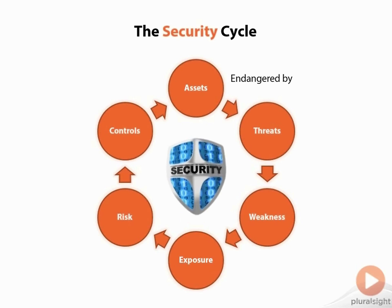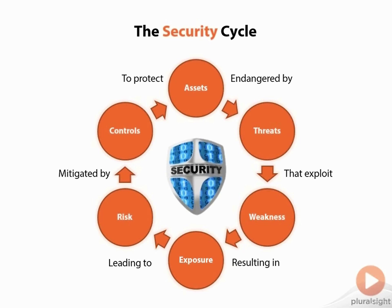If we look at this, we have assets that can be endangered by threats. Those threats are things that exploit weaknesses — vulnerabilities — in our systems. Those weaknesses result in exposure, and that exposure leads to risk, which is what we want to avoid or mitigate. Risk is mitigated by controls — things we put in place, whether operational, technical, or managerial — that we incorporate into our processes, systems, and infrastructure to protect our assets. And it goes around and around.